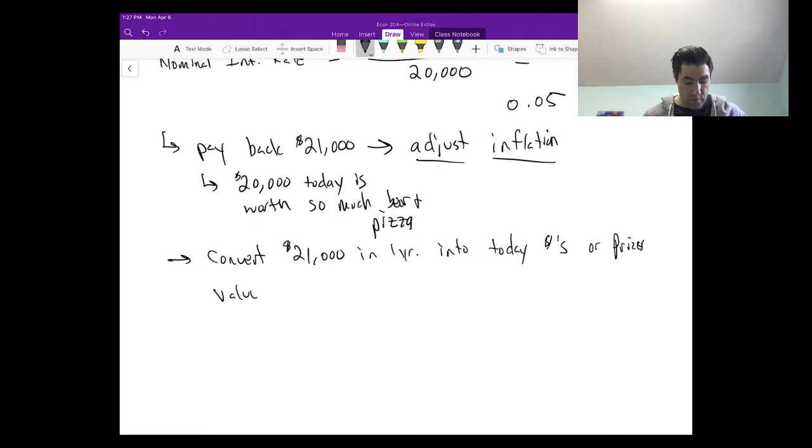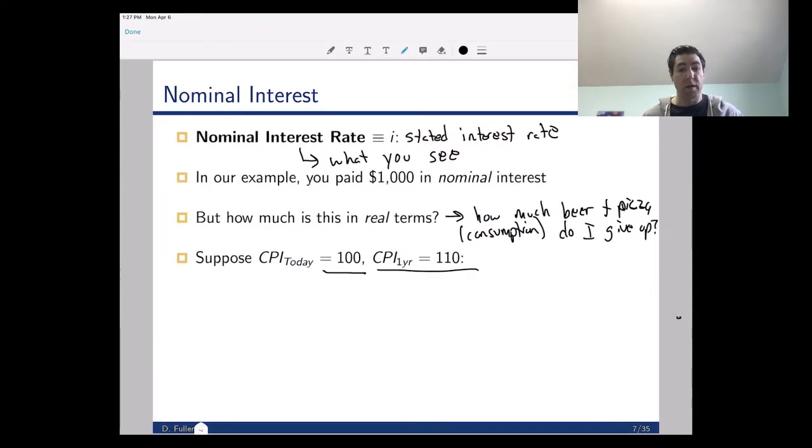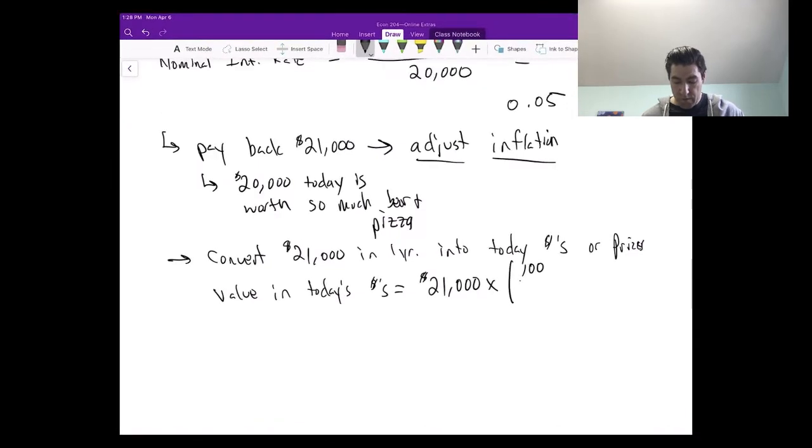The value in today's dollars is simply equal to the value in one year's dollars times the CPI today, which was 100, over the CPI in one year, which is 110. So we have 10% inflation between the two years. It's $21,000 times 100 over 110, and I believe that gets you to $19,091.